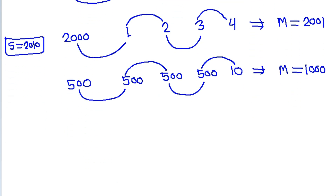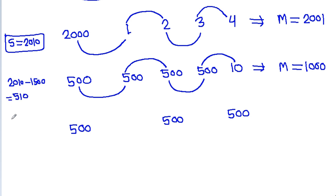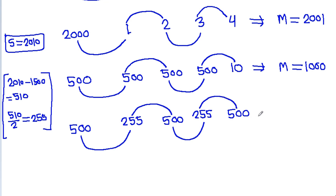Suppose a is 500, c is 500, and e is 500; then 2010 minus 1500 is 510, and 510 divided by 2 is 255. So suppose b is 255 and d is 255, then a plus b is 755, b plus c is 755, c plus d is 755, and d plus e is 755. In this case, m will be equal to 755.